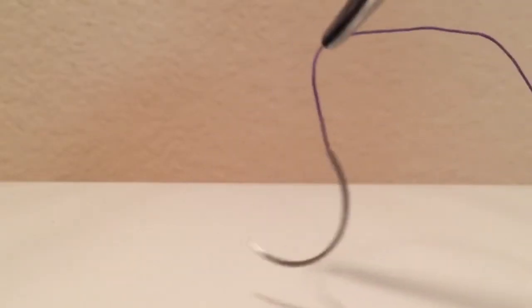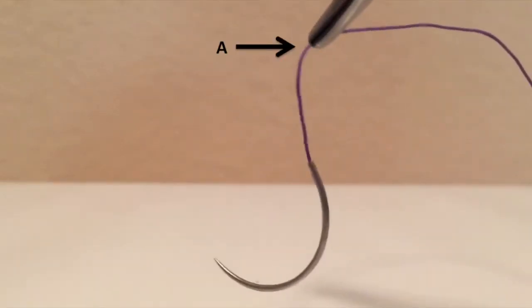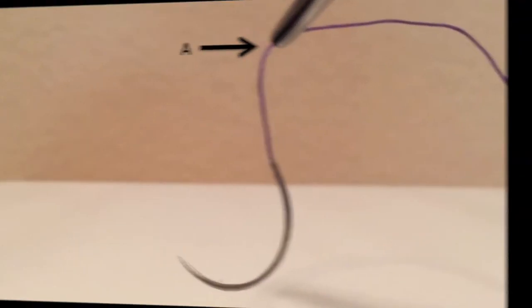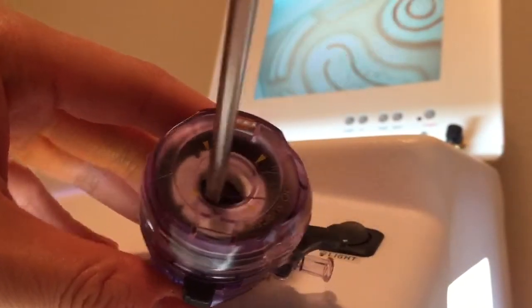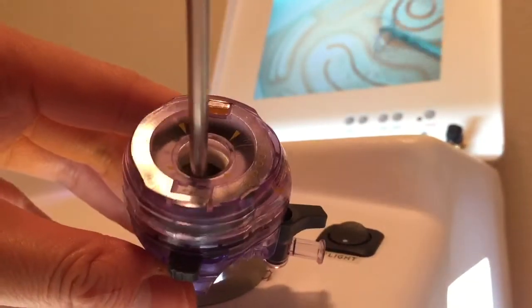Needle Entrance. First, grasp the suture at point A, about 2 cm from the needle hub. Then if you are working with a 10-12 port, you can directly insert the CT1 needle into the abdomen.